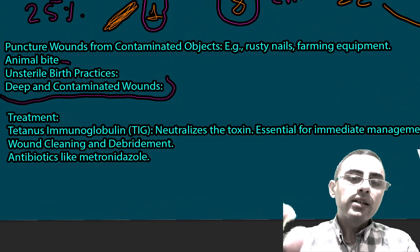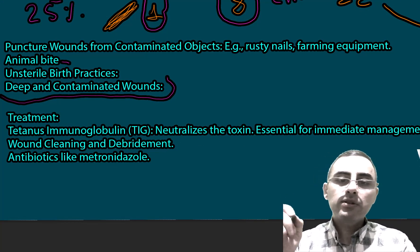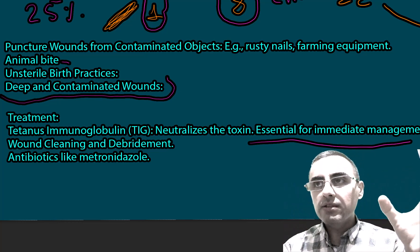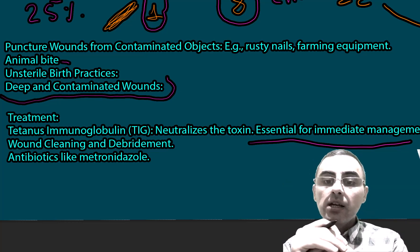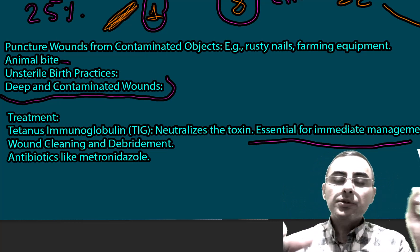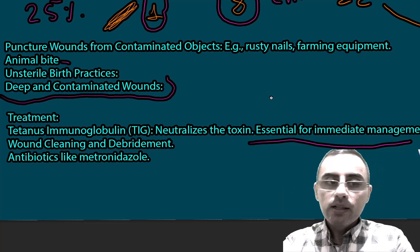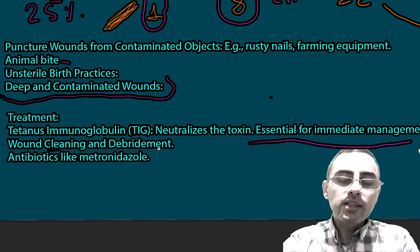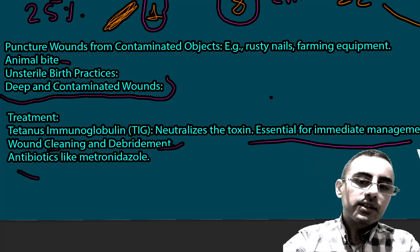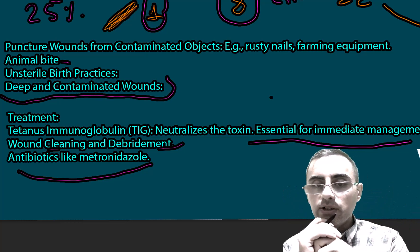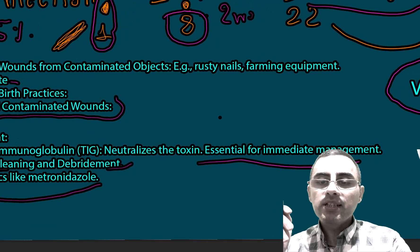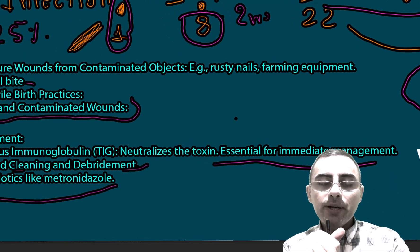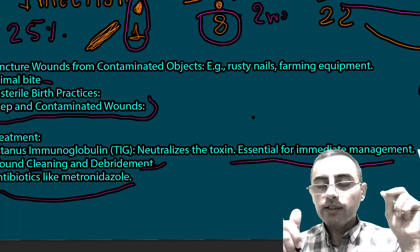Treatment involves tetanus immunoglobulin, which neutralizes the toxin and is essential for immediate management. Even with good management, treatment can last several weeks, as improvement is a slow process. Wound cleaning and debridement are important, and antibiotics such as metronidazole or penicillin are used to kill Clostridium bacteria.